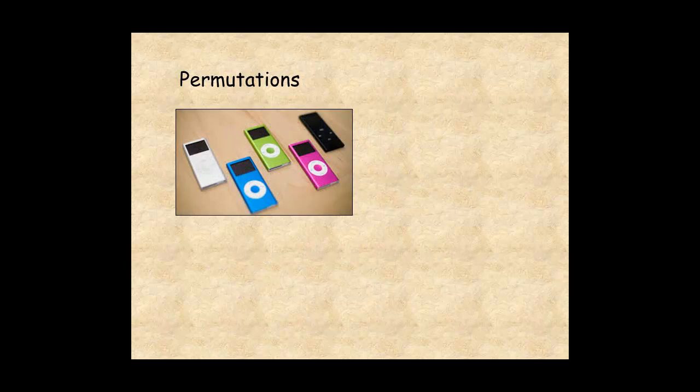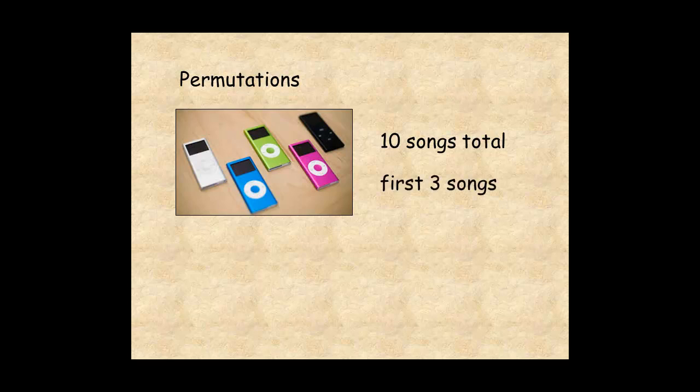Permutations can be used to calculate probabilities. Suppose you have an MP3 player like one of these iPods, and your playlist has 10 songs. To find the different ways the first three songs could play, find the permutations of 10 things taken 3 at a time. There are a total of 720.